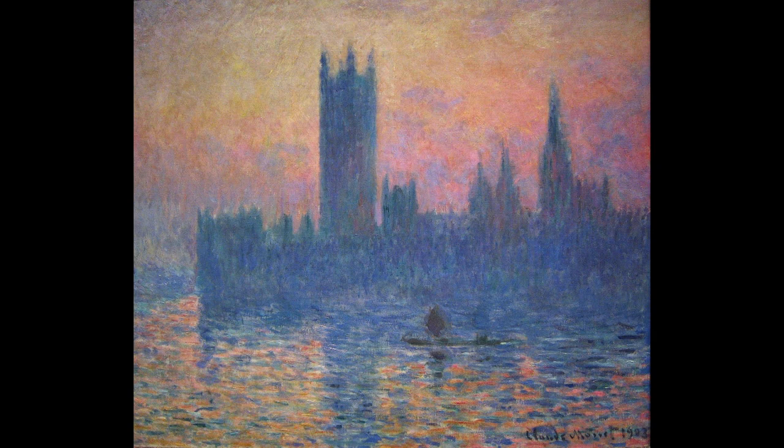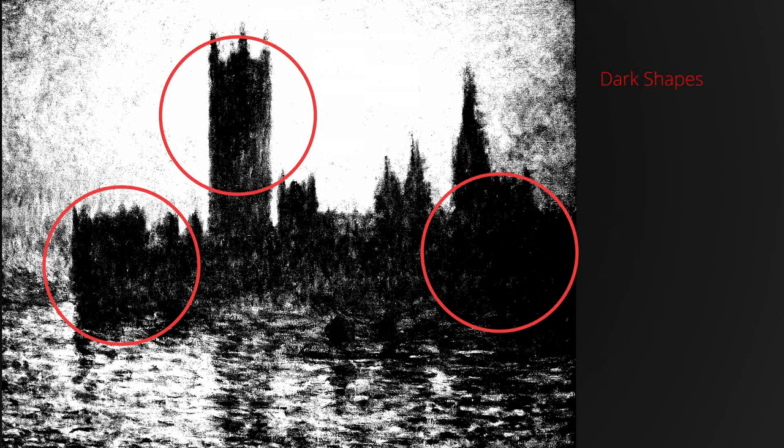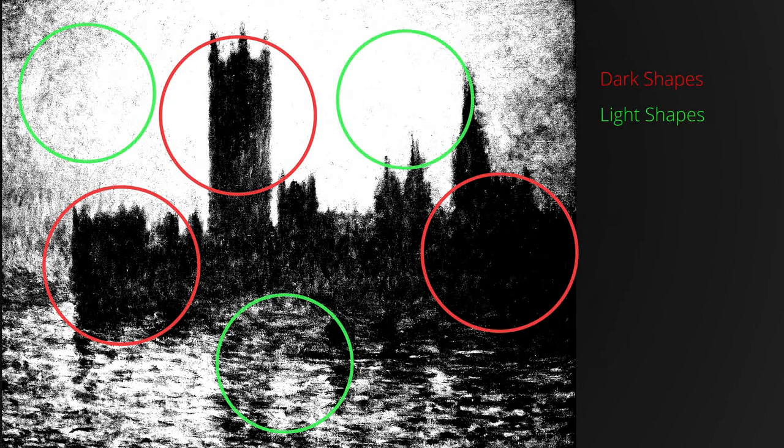Many of the old master paintings have very simple notan structures and also have very few shapes. For example, many of Monet's masterpieces are just two values, as you can see here if we convert this picture to black and white. Here we have just dark shapes and light shapes, and very simple notan structures can produce very strong compositions.